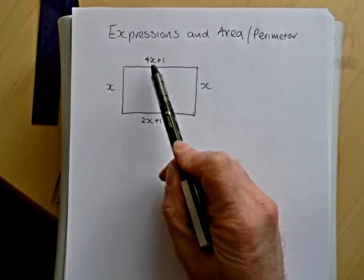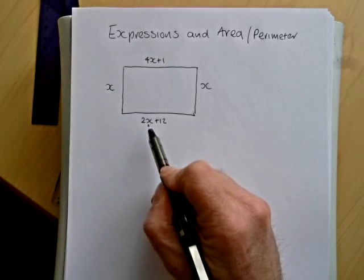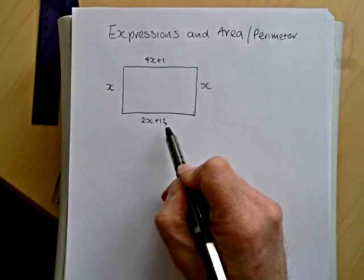One side is equal to 4x plus 1, the other side that's the same is 2x plus 12.